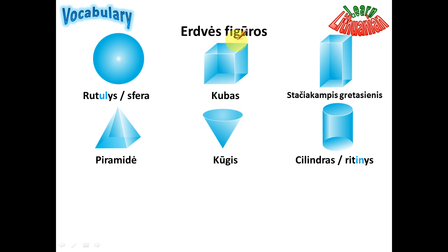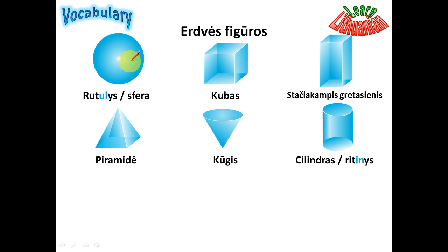Now, erdvės figūros — spatial shapes, or 3D shapes. 'Erdvė' means space. This is 'rutulys', or 'sfera' — a sphere. And 'kubas' — a cube.